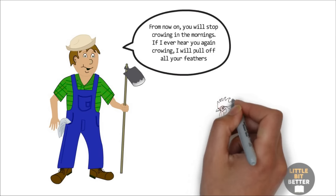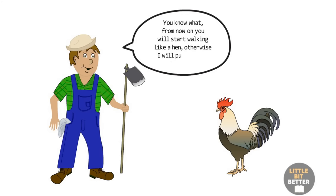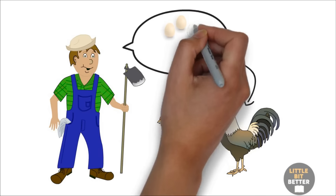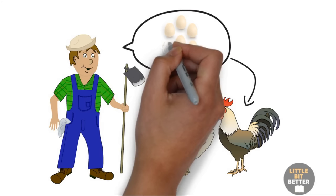Sometime passes and the farmer comes back again and says, you know what? From now on, you will start walking like a hen. Otherwise, I will pull off all your feathers. Again, the rooster says nothing and starts walking and behaving like a hen. He starts to hang out with hens and even forgets that he is a rooster. A few more months pass by, and the farmer comes back again with another request and says, you know what? From now on, you will start giving me eggs just like other hens. Otherwise, I will pull off all your feathers and make a dinner out of you.